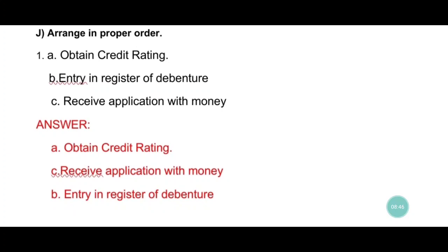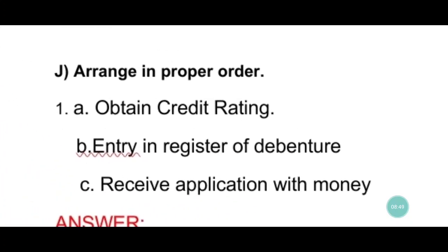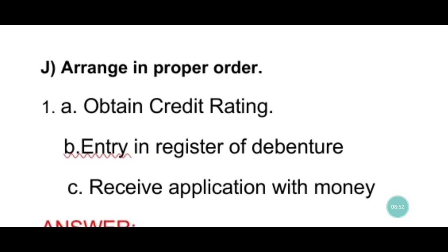Now we see J part: arrange in proper order. You have to arrange the answers in the correct order. For this, open page number 72 in your textbook — procedure for issue of debenture. The items given are: opt in credit rating, entry in register of debenture, receive application with money. You have to arrange these in the correct process order.